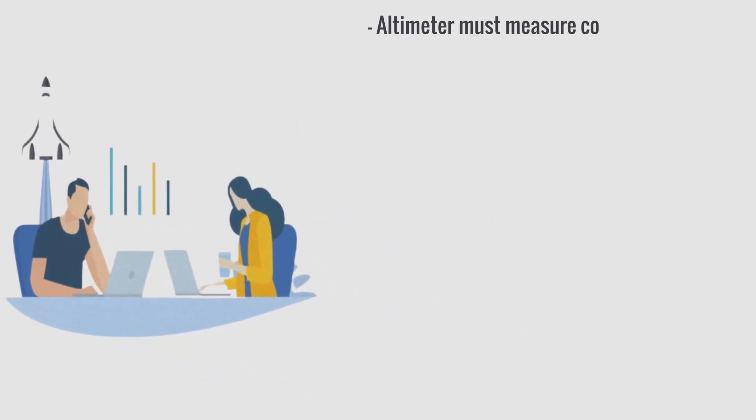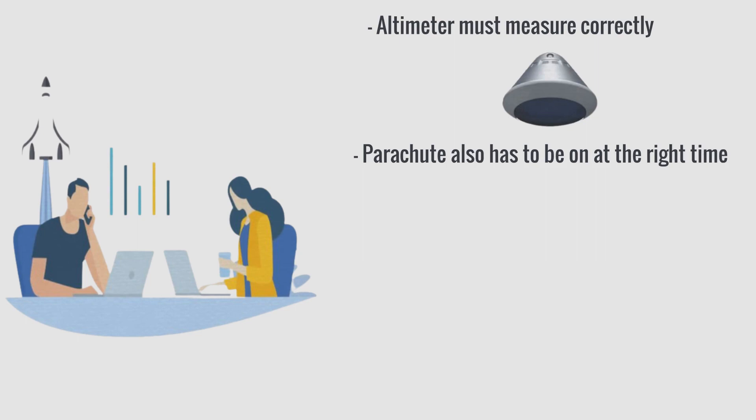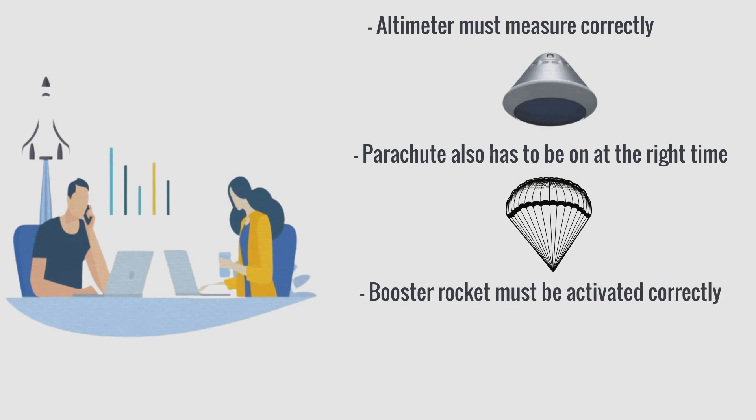First the altimeter must measure correctly, if it's wrong, then everything is wrong. The ship will rely on the altitude to automatically release the heat shield. If it's released early, the ship will burn, but if it's released late, the ship will be heavy, the parachute doesn't break in time. The parachute also has to be on at the right time. Then the booster rocket must be activated correctly, soon it will run out of fuel, or late it will not be able to stop the ship and many other factors. Just one mistake, and everything will fail.